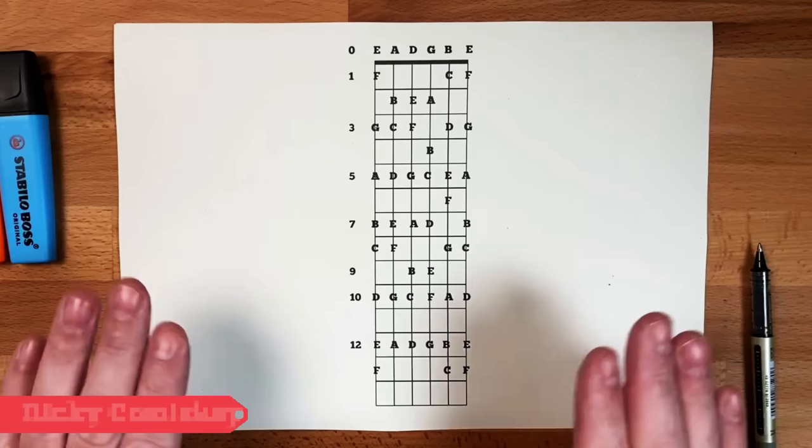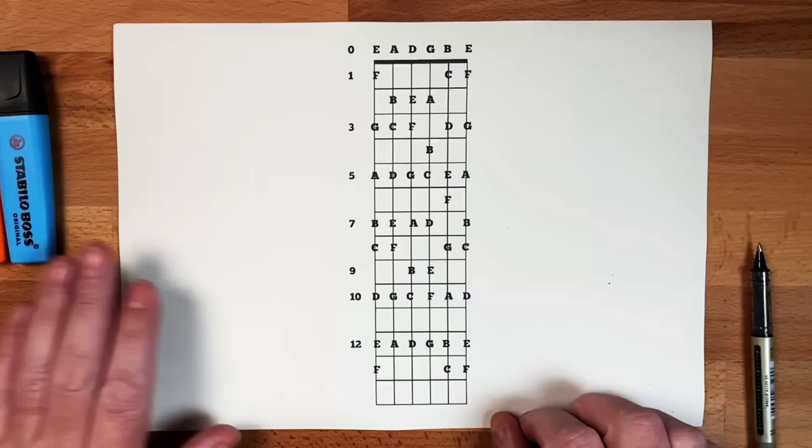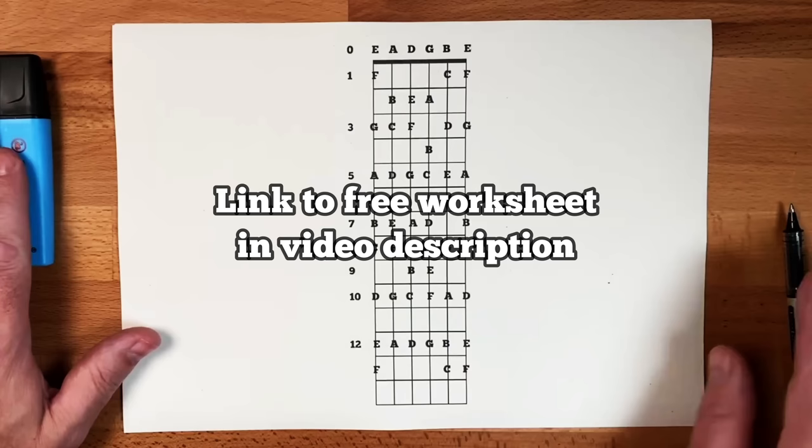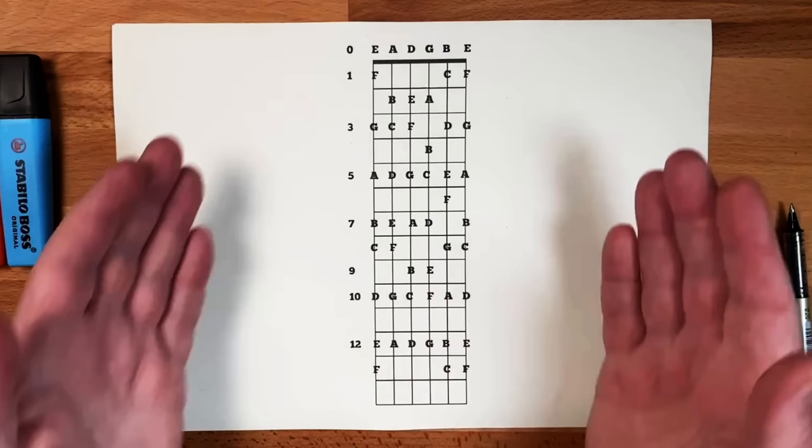We're not getting into any sharps or flats. As you can see, I've got my trusty highlighters with me and I've got my pen here. We may need the pen, we may not. But what we're going to do is highlight a few of the things on here. I just want to show you some of the things that you can spot straight away.